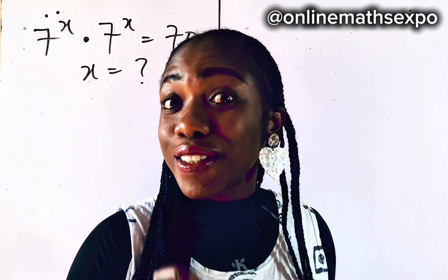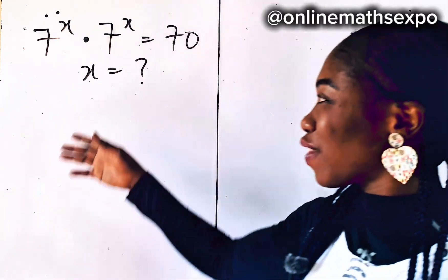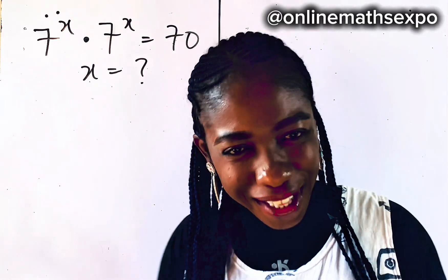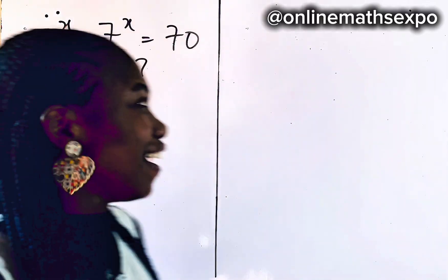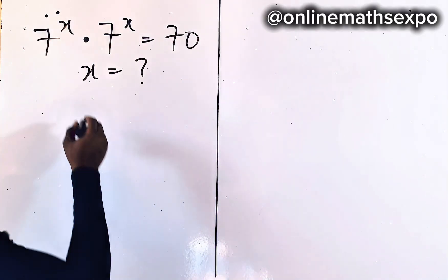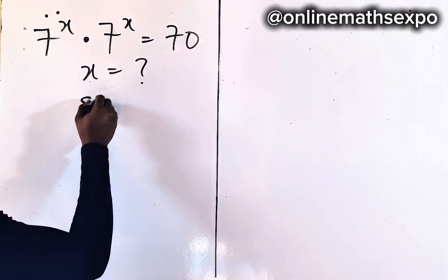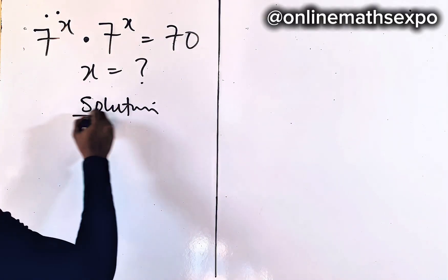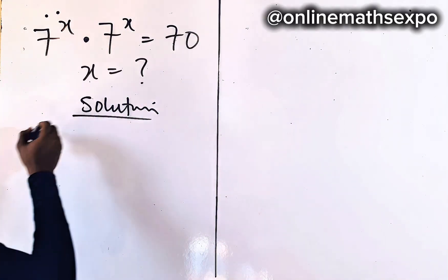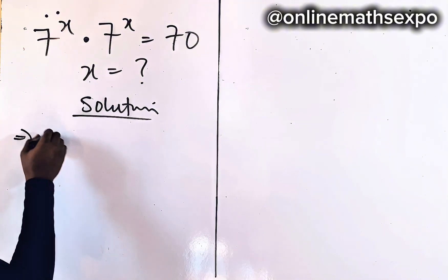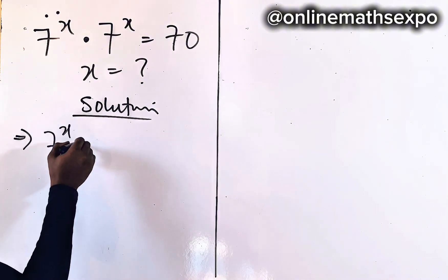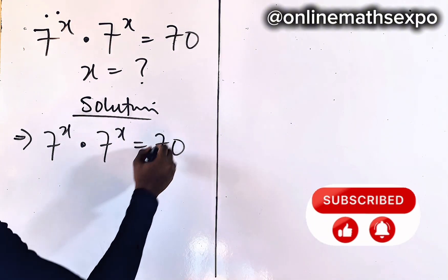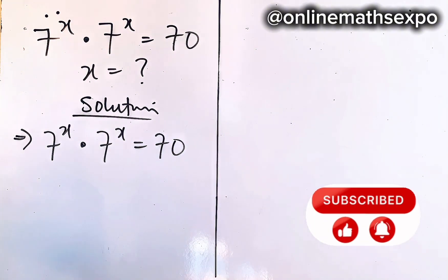In this tutorial, you're going to learn how to solve this beautiful equation. Let's do that together. So we begin with our solution. This is what we have: 7 to the power of x multiplied by 7 to the power of x is equal to 70.